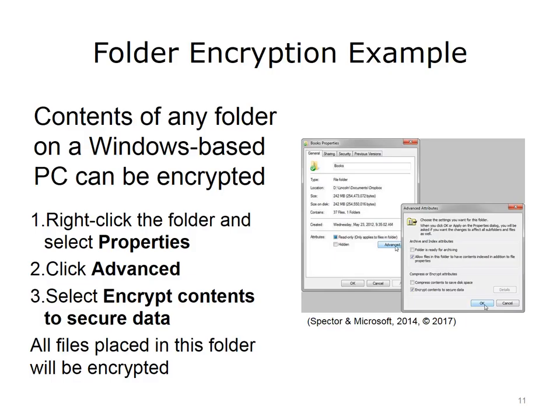The contents of any folder on a Windows-based PC can be encrypted. To encrypt an existing folder, go to Windows File Explorer and locate the folder to be encrypted, then right-click on it. Select Properties from the context menu. The Properties dialog box opens. Next, click Advanced, then click Encrypt Contents to secure data to encrypt all of the documents in the folder. Click OK to apply the setting to the folder and all of its contents. Subsequently, all files placed in this folder will be encrypted, and can be viewed only when the user is logged in with the username and password used to encrypt the folder. All other user accounts will receive an Access is Denied message when they try to open any file in the encrypted folder.